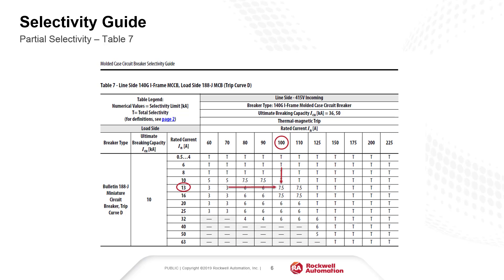This means that if the maximum prospective short circuit current on the load side of the 188J breaker is more than 7.5 kA, it would not be possible to ensure selective coordination — meaning both circuits could trip.